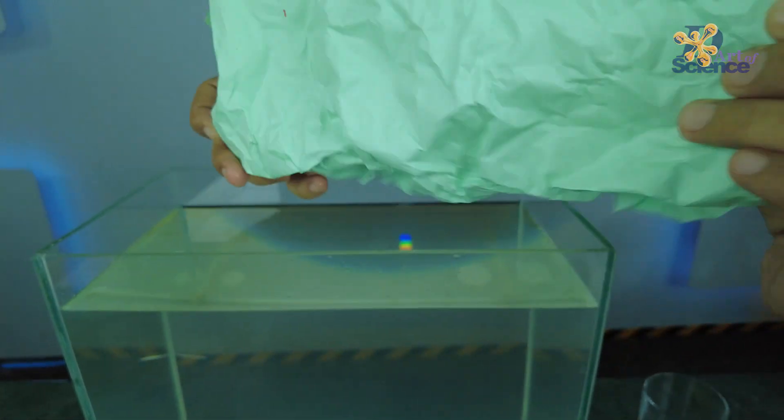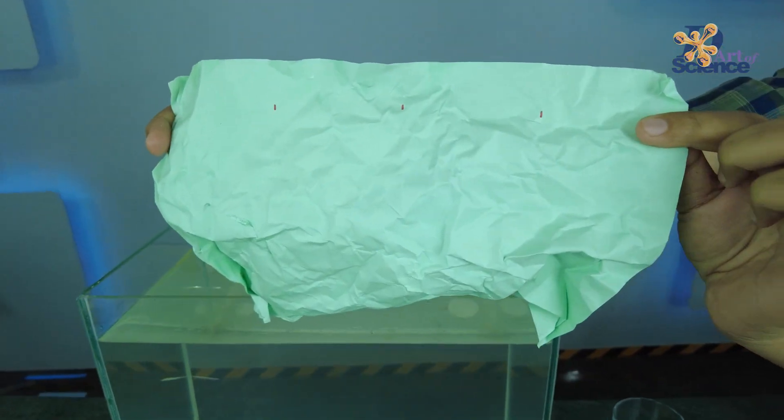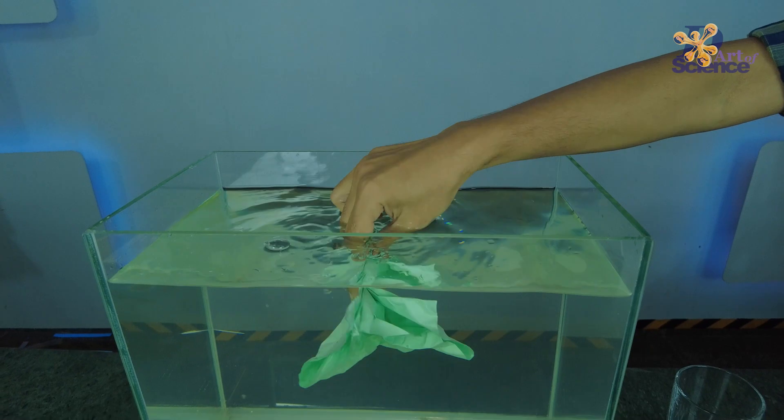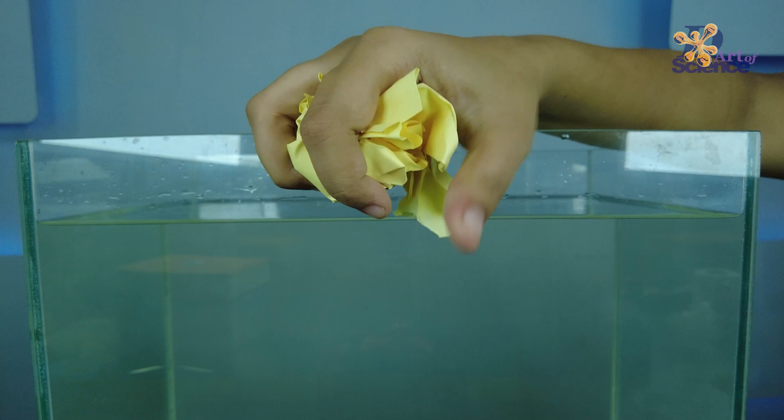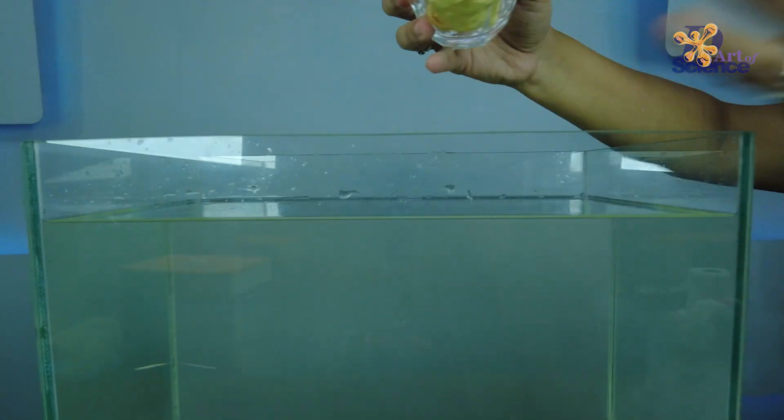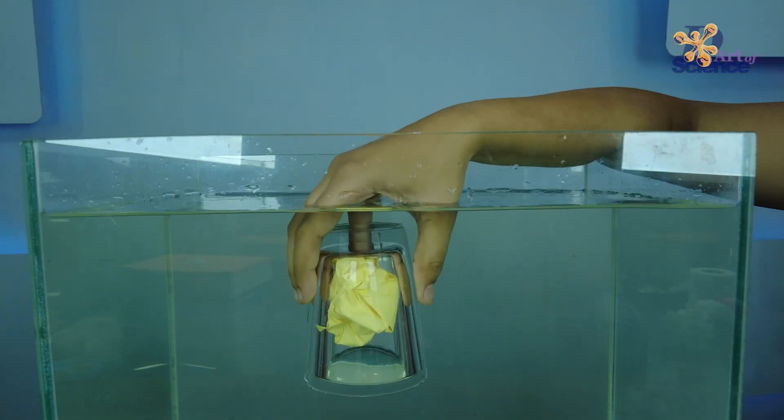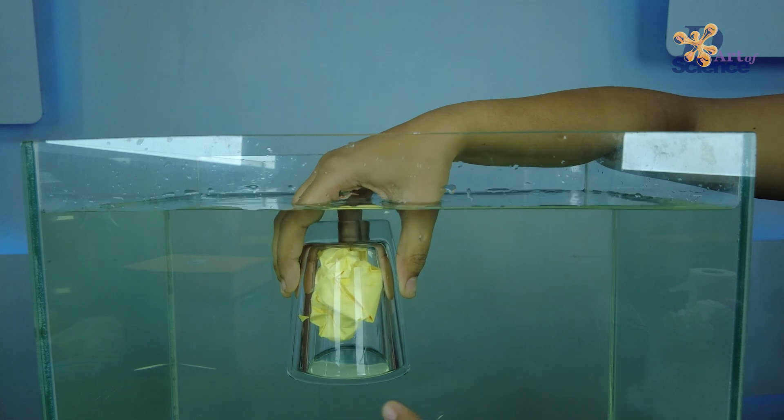It's completely dry. This shows that when we submerge the glass straight down into the water, the air was trapped inside the glass which takes up space, and therefore it does not allow the water to get inside the glass.